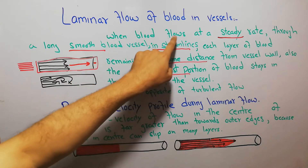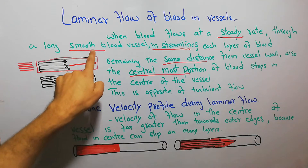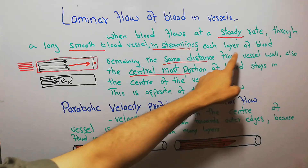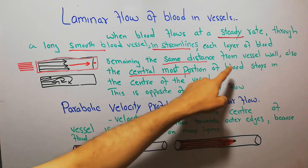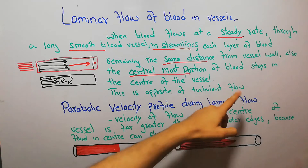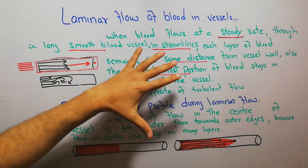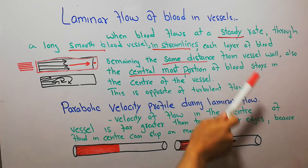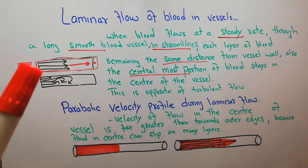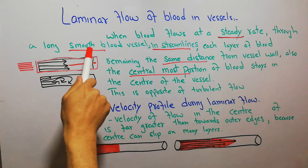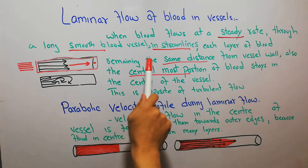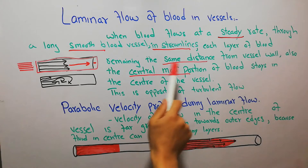Laminar flow of blood is when blood flows at a steady rate through a smooth blood vessel in streamlines, each layer of blood remaining the same distance from the vessel wall, and the central most portion of blood stays in the center of the vessel. These are the key characteristics that indicate laminar flow.